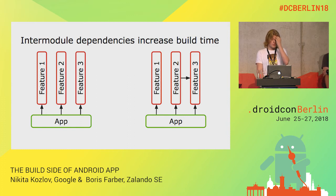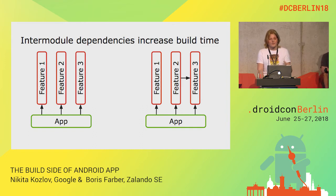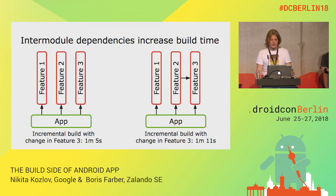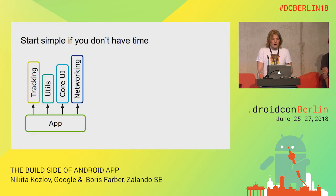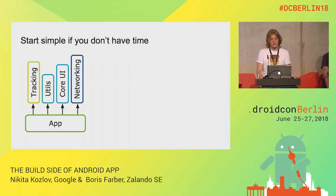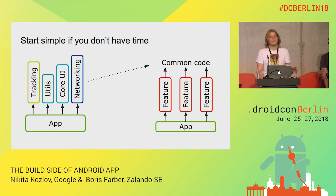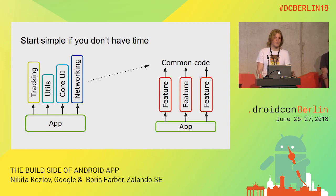Another thing to always keep in mind with modularization is inter-module dependencies. If you change one feature module, you may have to recompile another. That adds a little bit of time, and as the app grows and the number of modules increases, these small things can slow you down. So you might need to think carefully about how your inter-module dependency structure works. We recommend you start simple: extract things you rarely change, like utilities, core UI components, network, or tracking infrastructure, and only then start extracting features. You'll always benefit from modularization without ending up with increased build times.